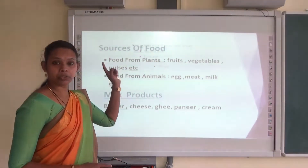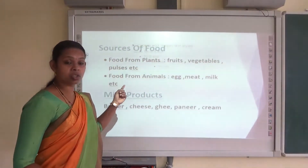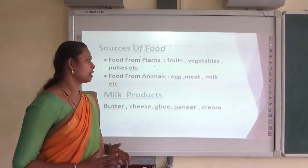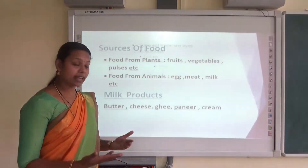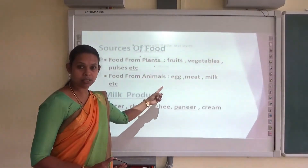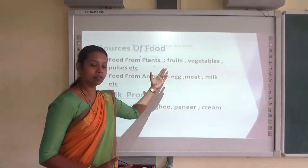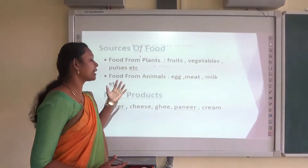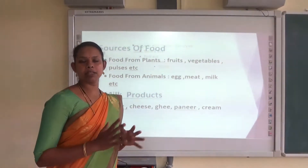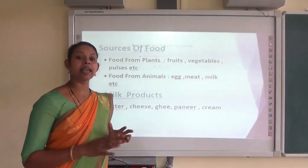The food items such as fruits, vegetables, spices, etc. we are getting from plants. And which are the food items we are getting from animals? We are getting egg, meat, milk, etc. from animals.